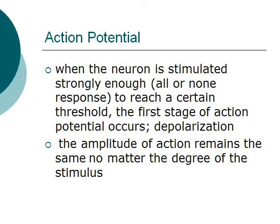When the neuron is stimulated strongly enough — an all-or-none response — to reach a certain threshold, the first stage of the action potential occurs, which is known as depolarization. The amplitude of the action potential remains the same regardless of the degree of the stimulus.